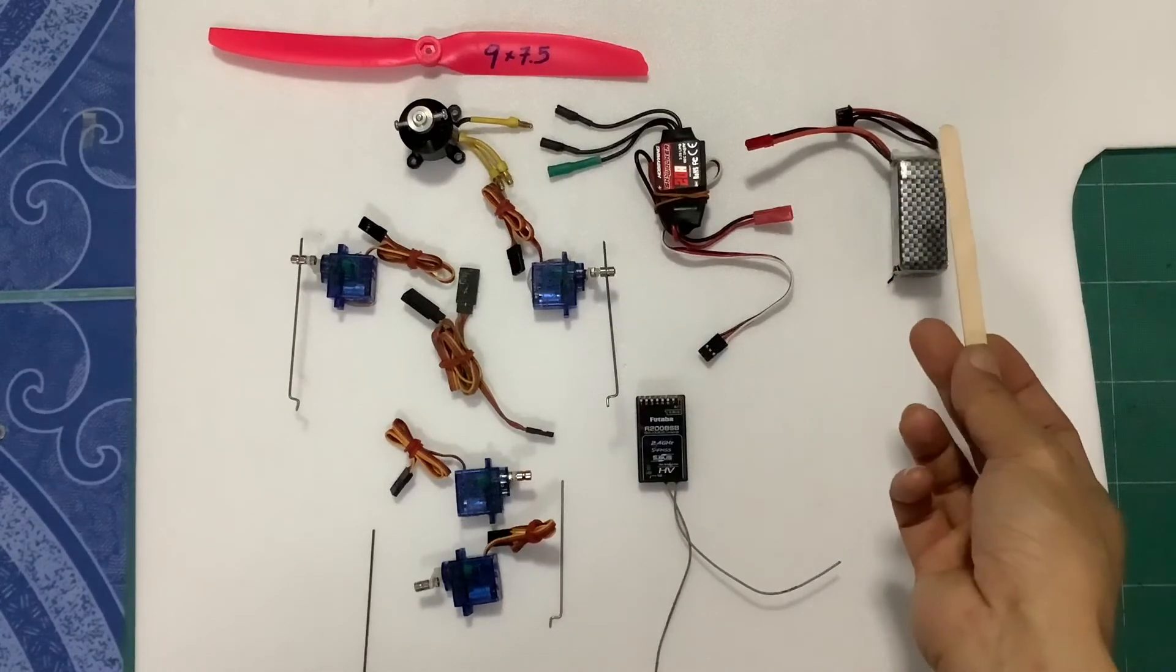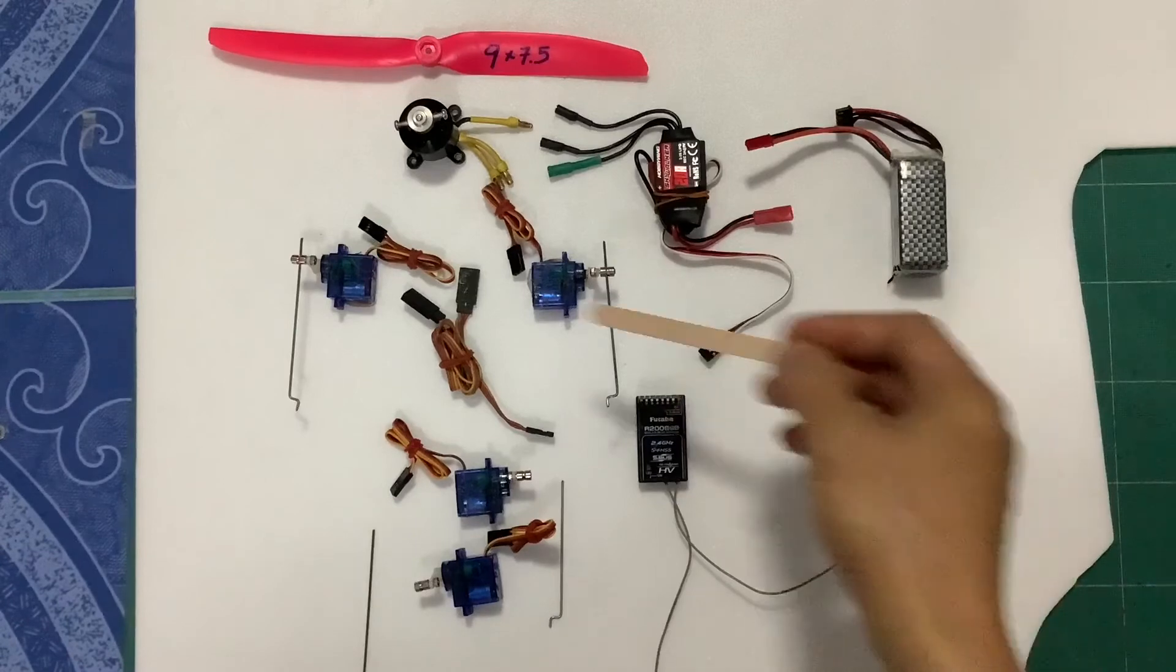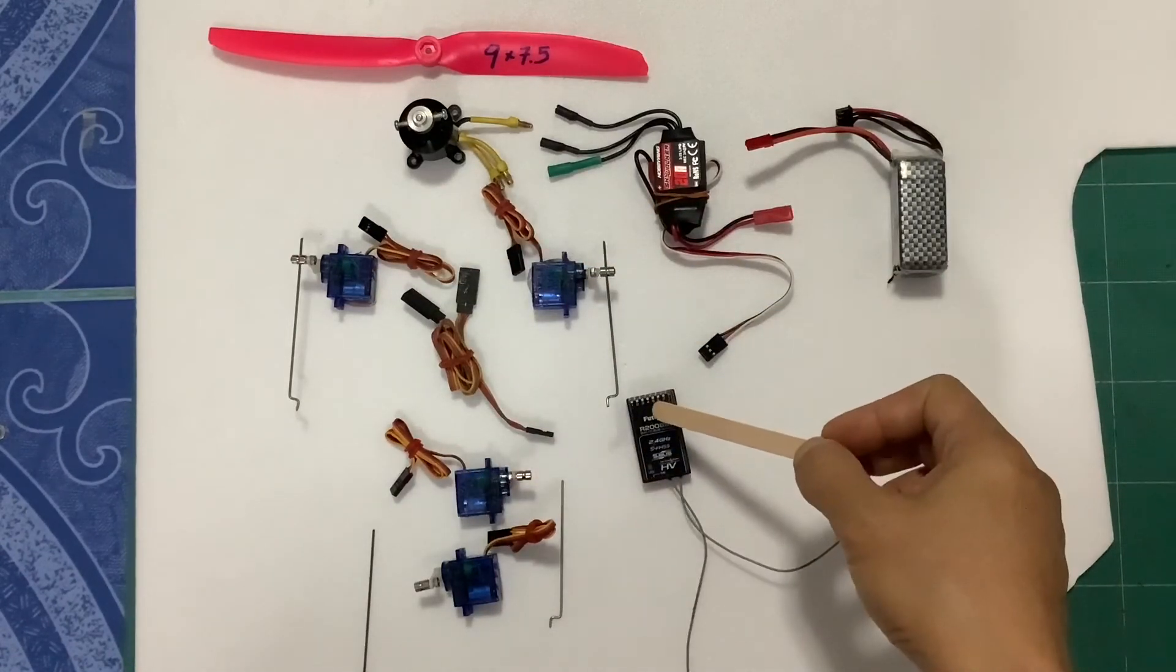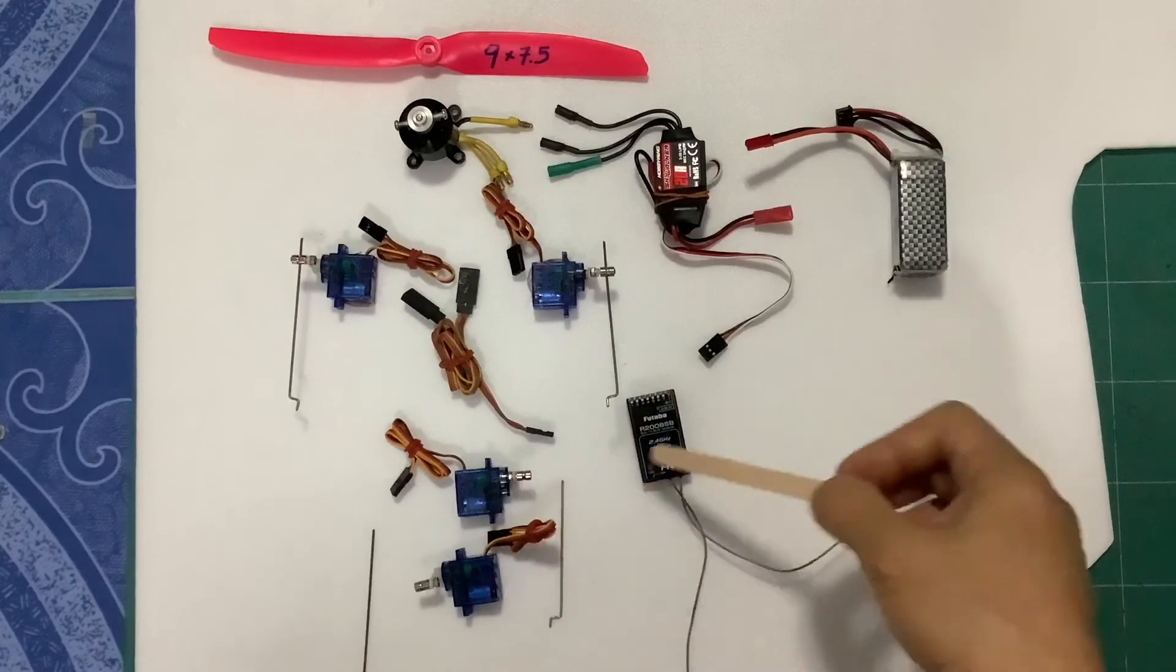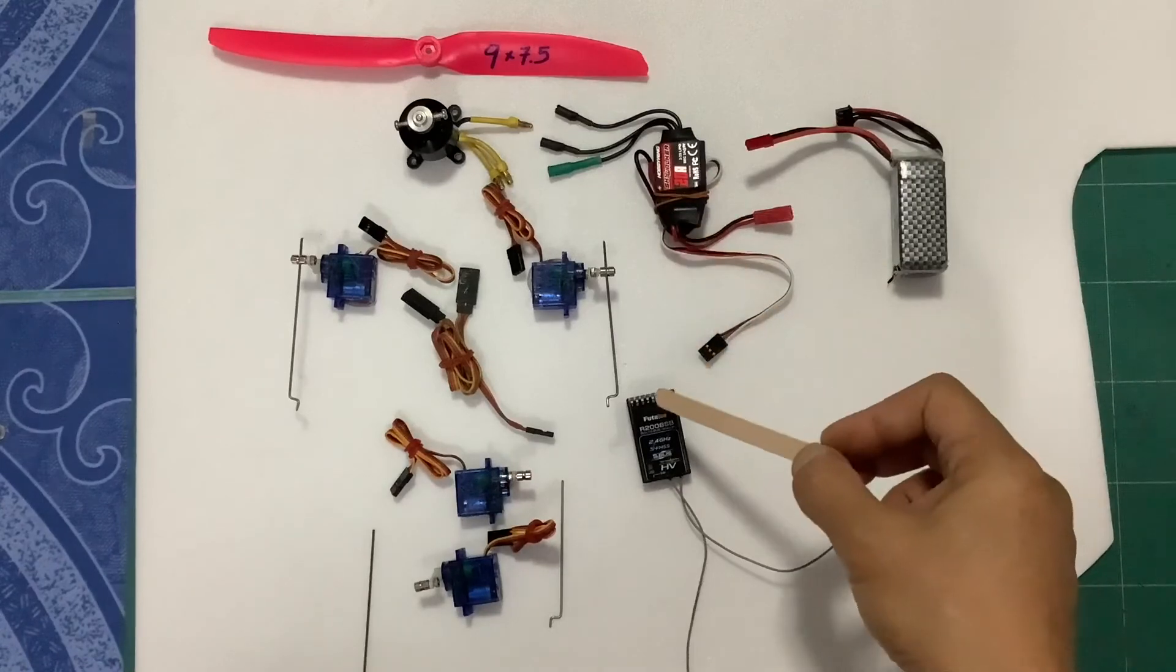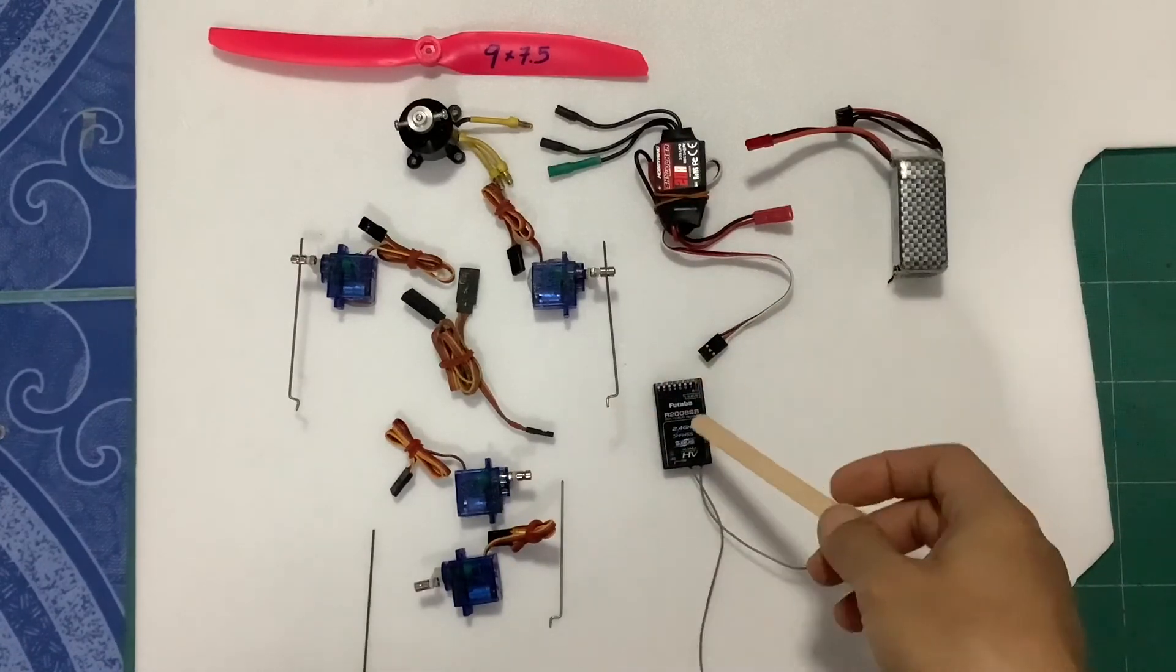For example, Futaba, the aileron connect to channel 1. Elevator connect to channel 2. Rudder connect to channel 4. And ESC connect to channel 3. It depends on your receiver.